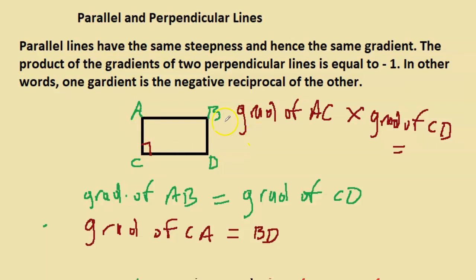If I know the gradient of CD and I know the gradient of AC, and I multiply them, the result should be minus 1. In other words, if you multiply two values to be minus 1, say for example, you have the actual number, say 2 over 7. First and foremost, before I even think about minus 1, what number can I multiply 2 over 7 to get 1? It's reciprocal. It's reciprocal or its inverse. So 2 over 7 times 7 over 2 gives you 1.